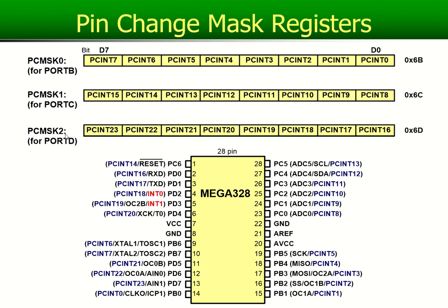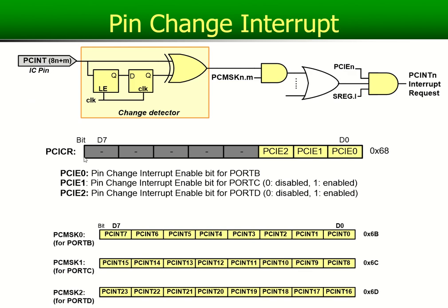The port change mask register is associated with D. There's another register — this is called the pin change interrupt control register. If you look at this specific register, it's got PCIE zero — pin change interrupt enable zero. This is associated with port B. So if you want any of the pins on port B to be part of this pin change interrupt, this bit must be a one.